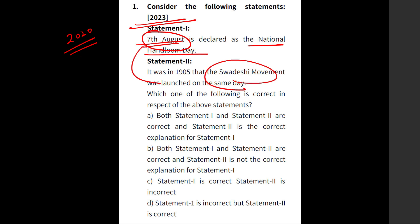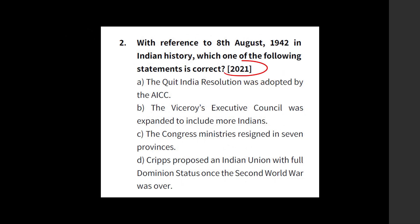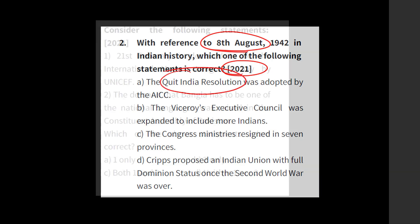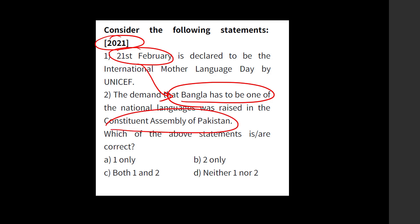Again, you can see in Prelims 2021: 8th August — Quit India Resolution. Then again, another question in 2021: 21st February, linked to International Language Day and something related to Bangladesh history — the Constituent Assembly of Pakistan. You can see these types of questions are increasing in the UPSC Prelims paper.